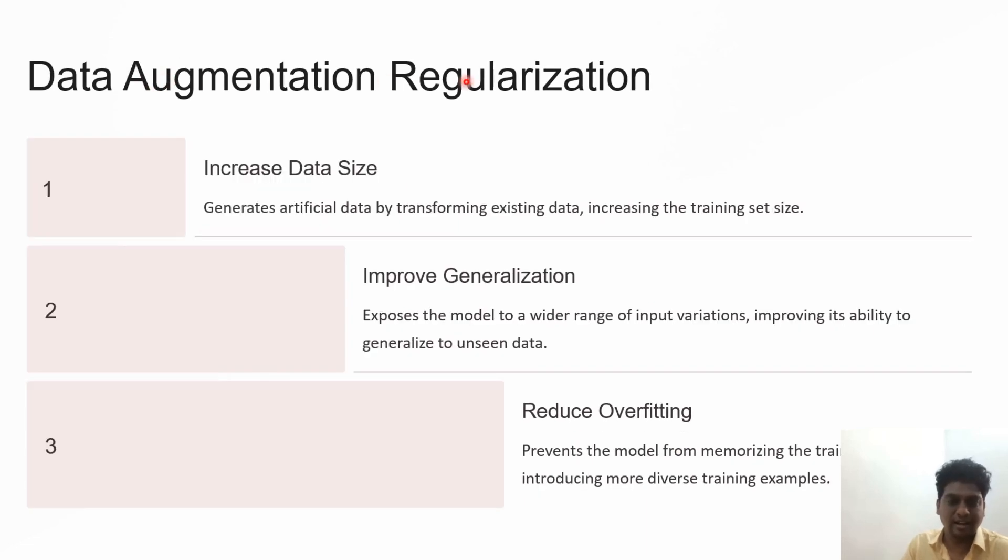Data augmentation regularization increases data size by transforming data into several formats, improving generalization ability on unseen data and reducing overfitting. Rather than memorizing data, the model learns patterns.